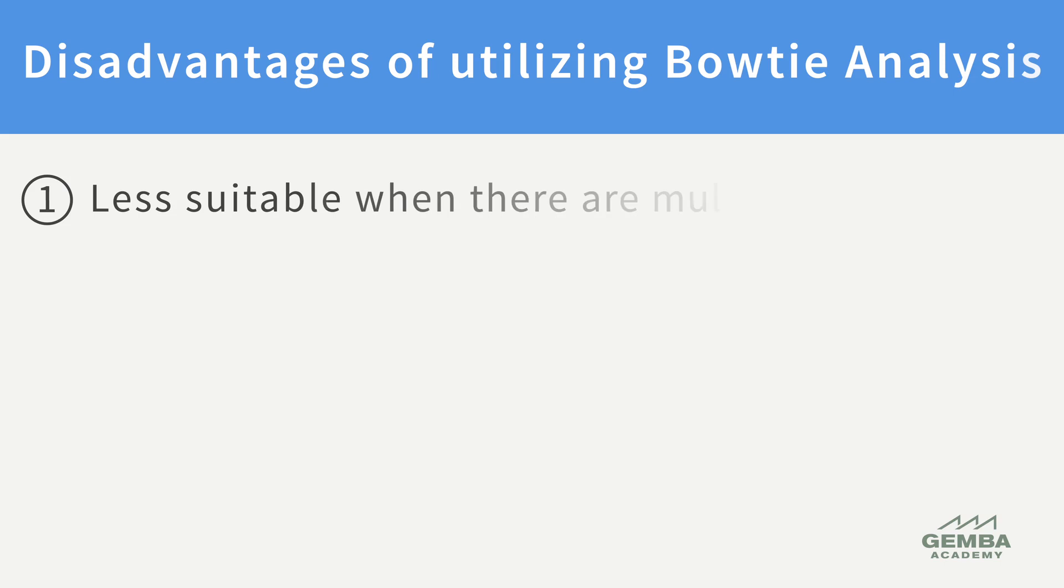The first disadvantage of bowtie analysis is that it is less suitable when there are multiple causes connected via complicated pathways, for example, AND or OR gates.